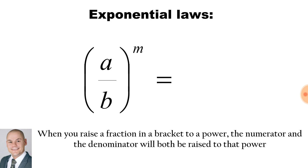Here we have a fraction inside the bracket, all to the exponent of m. When you raise a fraction in a bracket to a power, the numerator and the denominator will both be raised to that power. Therefore we'll have the base a to the exponent of m over the base b to the exponent of m.